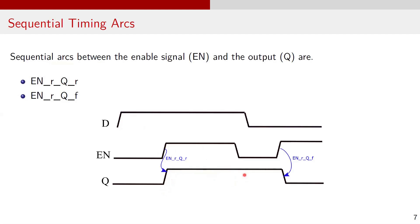Now let's look at the other sequential arc between enable and output pin Q. Initially, output Q is 0 and data input is 1, but since enable is 0, Q remains at 0. When enable transitions to 1, output Q starts following data input D and transitions to 1, creating the timing arc EN rise → Q rise. In another scenario, suppose output Q is initially 1, data input D is 0, and EN toggles from 0 to 1. In this case, output Q transitions from high to low, creating the timing arc EN rise → Q fall.